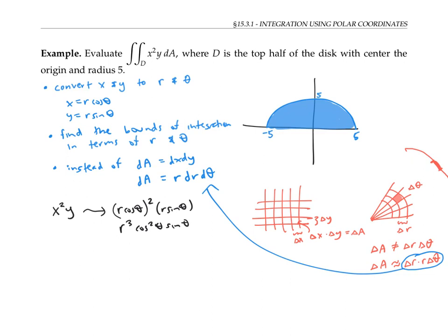Next, we need to find the bounds of integration in terms of r and theta. We can do this by writing the region in terms of polar coordinates. So this region D is the set of points with r theta, where r is between zero and five, since five is the radius of the circle. And theta is between zero and pi. Since the region extends from the positive x axis where theta is zero, to the negative x axis, where theta is pi.